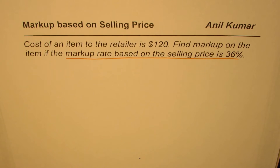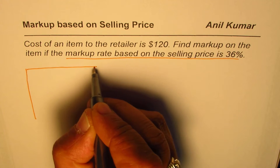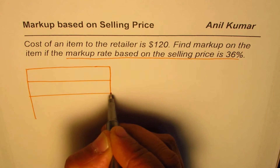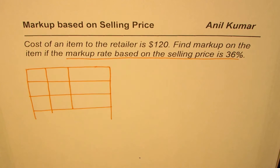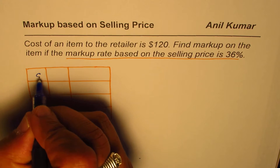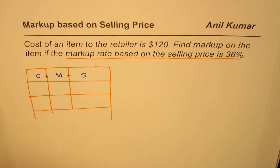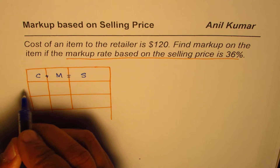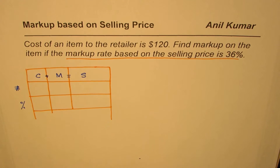We'll begin with the relation between markup, cost, and selling price. Let me make a standard table with three rows and three columns. We know that cost plus markup is equal to selling price. These are our variables: cost price, markup, and selling price. We'll write down the amounts in one row and the percentages or rates in another row — that is how we use our three-by-three table to solve such questions.